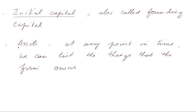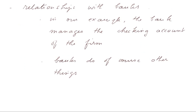We saw assets. At any point in time, we can list the things that the firm owns, and we did that after a few steps. We also saw the relationships with banks. In our example, the bank manages the checking account of the firm. Banks do, of course, other things, so let's look at banks for a while.